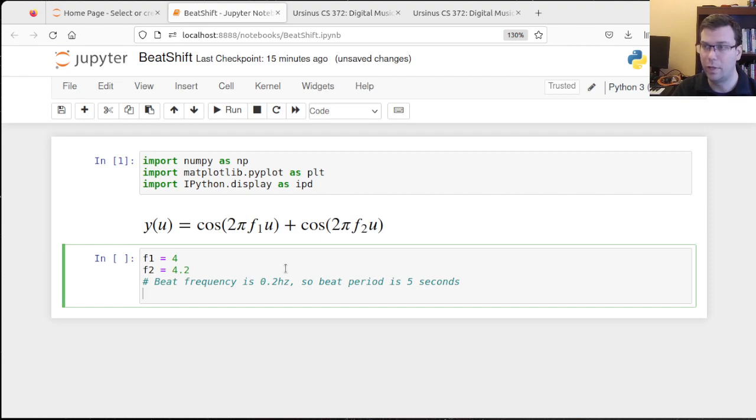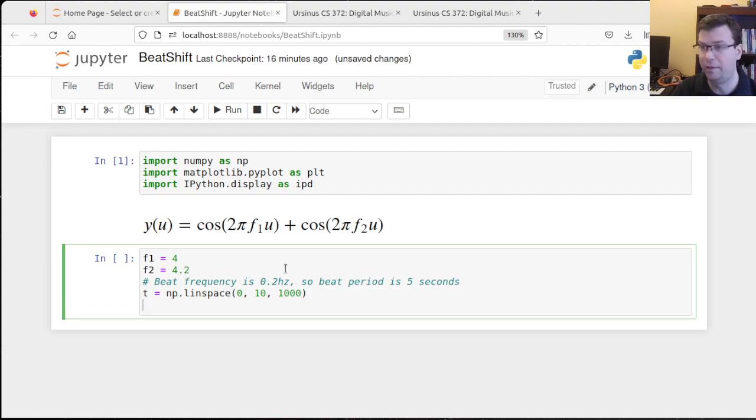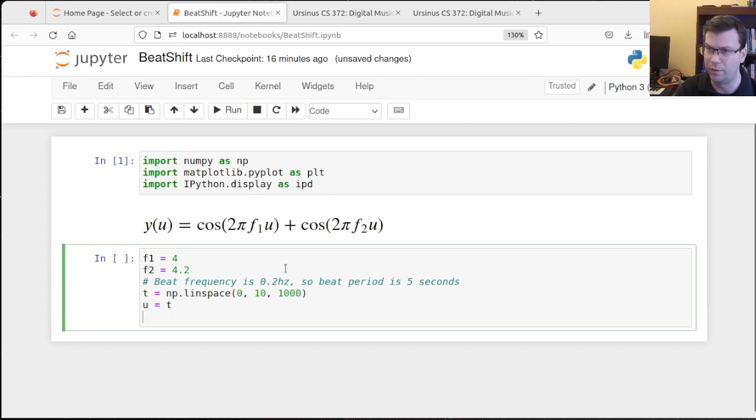Alright, so let's go ahead and sample these. So maybe I'll make time. Just for now, I'll put time, maybe sample evenly between zero seconds and ten seconds with a thousand samples. Let me go ahead then... Okay, here's what I'm going to do. For now, I'm just going to u and t are one and the same. They're the same thing. So I'll say u is equal to t.